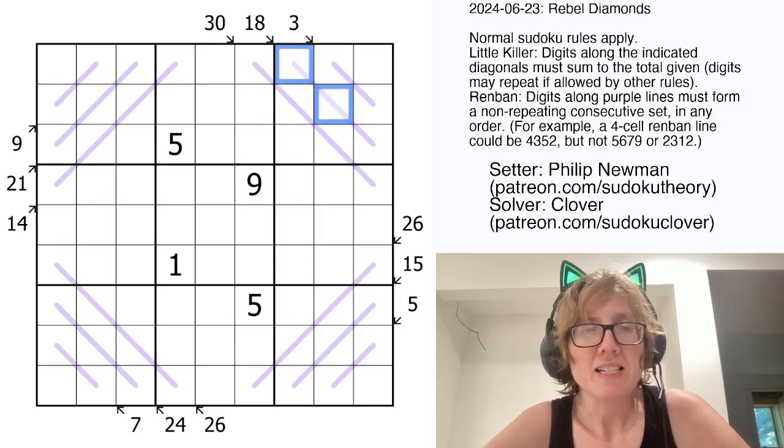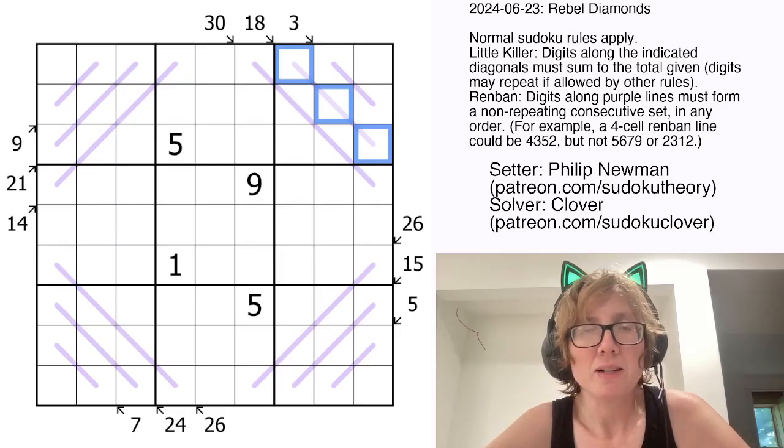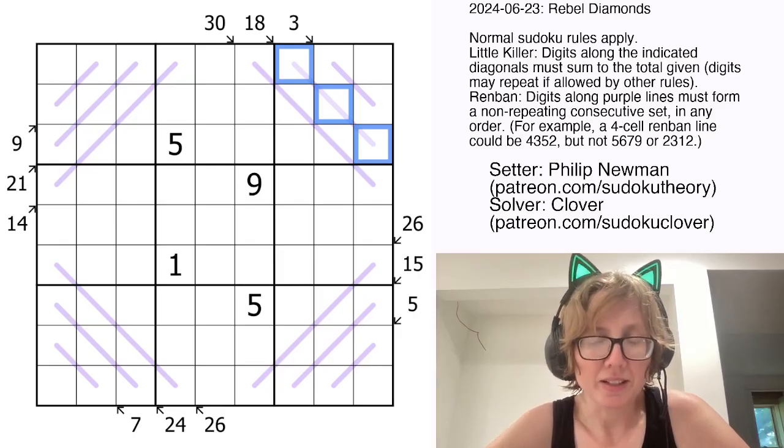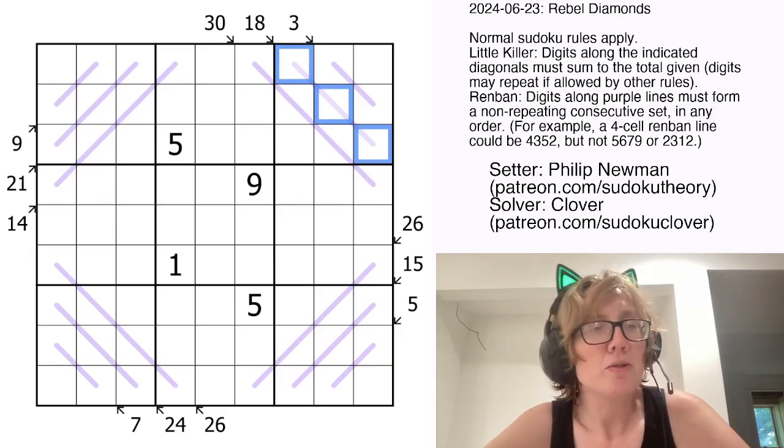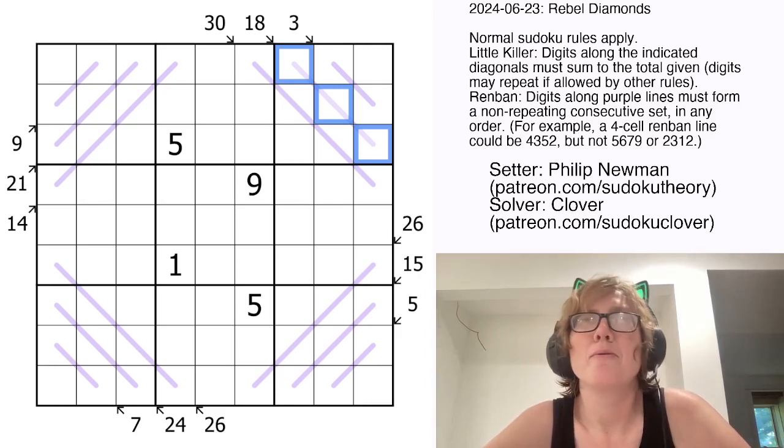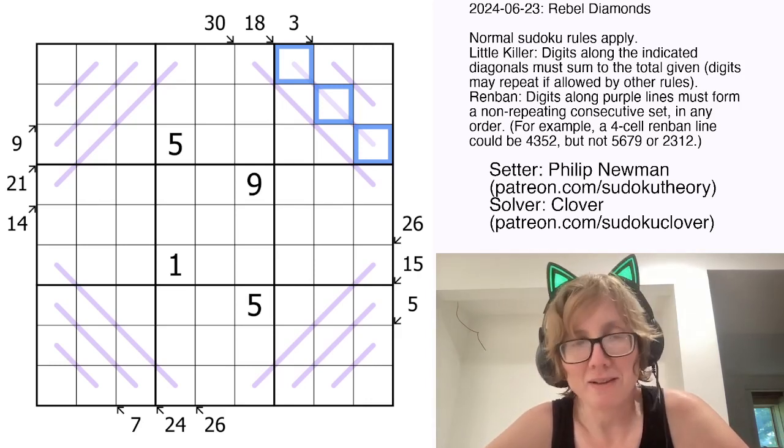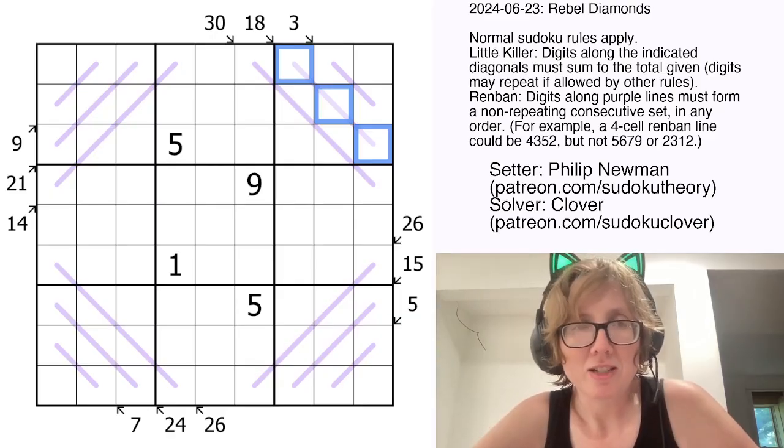And then finally these light purple lines are Renban lines. Those tell you that the digits along the line have to be a consecutive set that can appear in any order. So 1 2 3 is an example, or 2 1 3, or 4 5 6 7, or 7 4 6 5. Any possible ordering, as long as it's a set of consecutive digits that don't repeat.